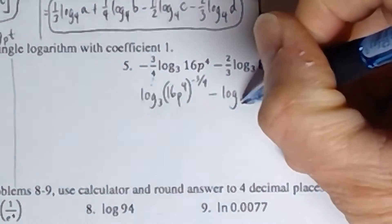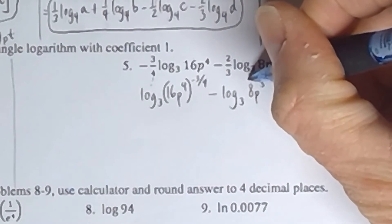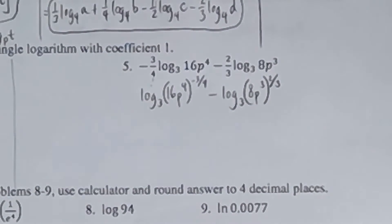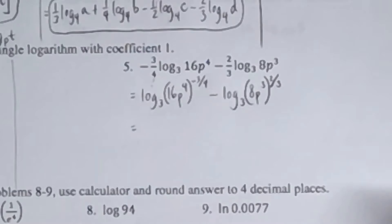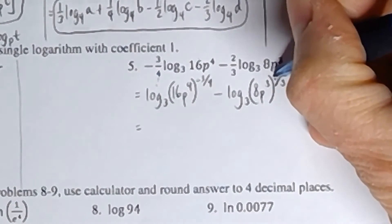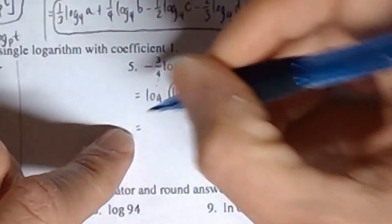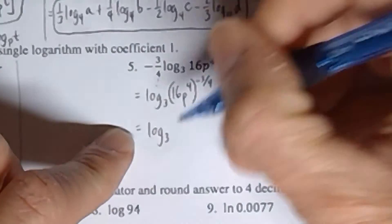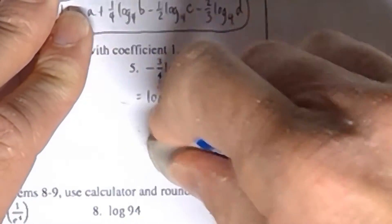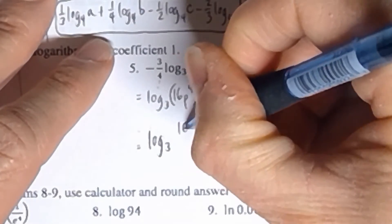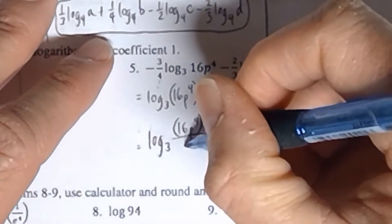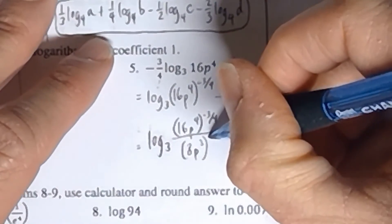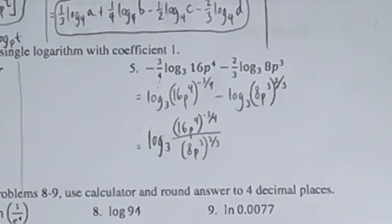Now we have log minus log with nothing in front, so we can apply the second property to condense into a single logarithm. The two product terms become numerator and denominator of a fraction: (16p to the fourth) to the negative three-fourths power, divided by (8p to the third) to the two-thirds power. Now they want us to simplify — get rid of the negative exponent and combine the double exponents.